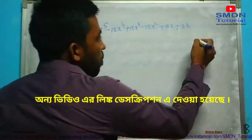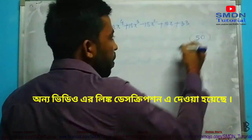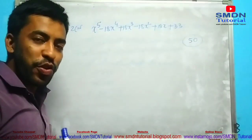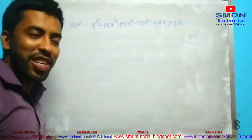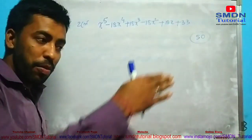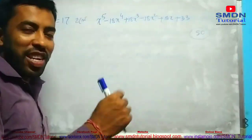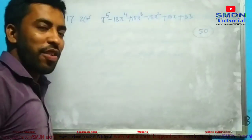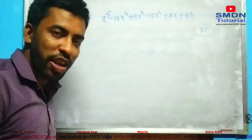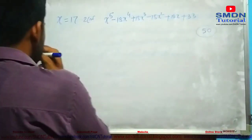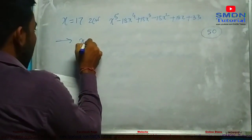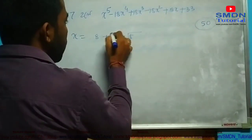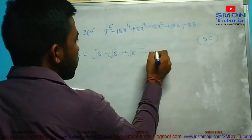And x to the power 5 plus 8 plus 8 minus 18. This is important to note that the answer is about 50. The expression involves root over 8 plus 8 plus 8 continuing.